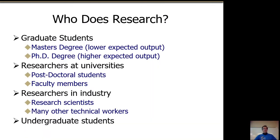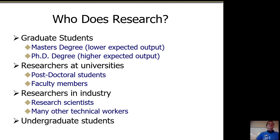So who does research? Graduate students — master's students and PhD students — will do it. We generally have lower expectations in terms of quality for master's students, though that doesn't necessarily need to be the case. In computer vision, there's a PhD student who came out of MIT whose master's thesis has over 50,000 citations. His PhD thesis, 20 years later, has about 50. So researchers in universities — post-doctoral students, faculty members — they can all do research.